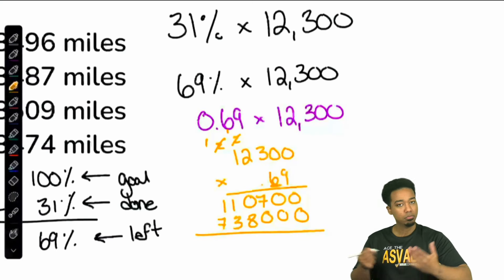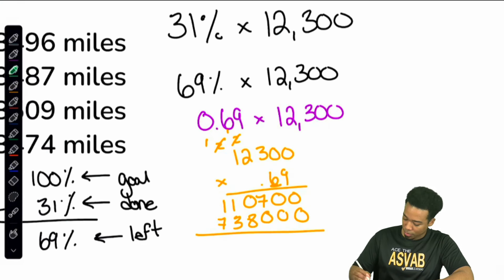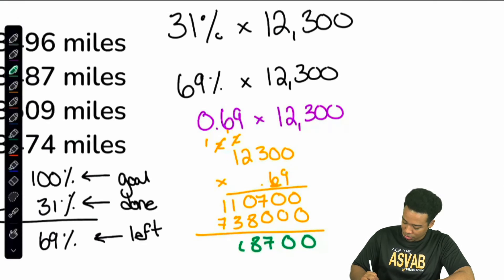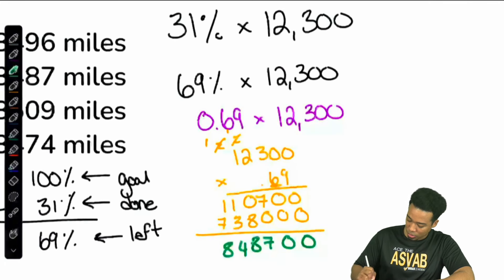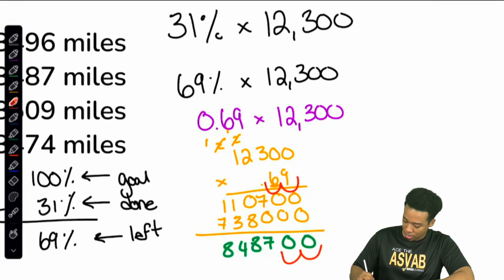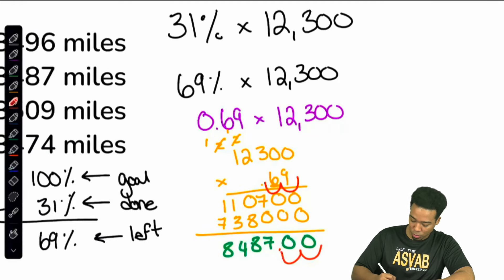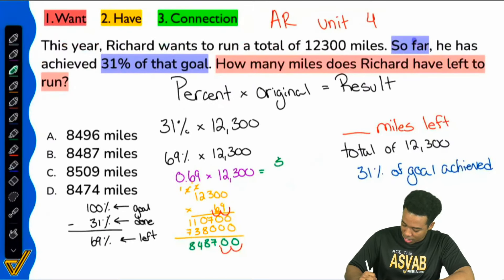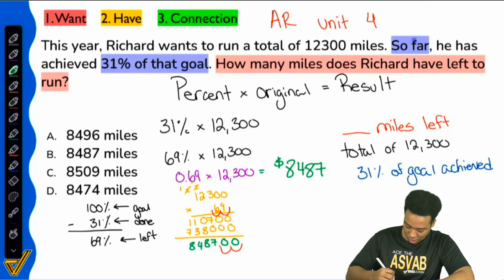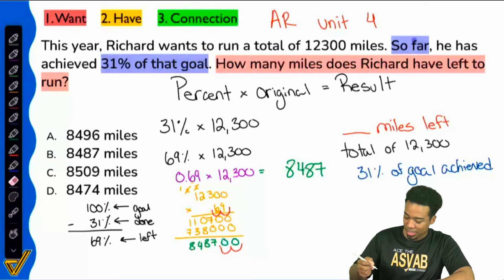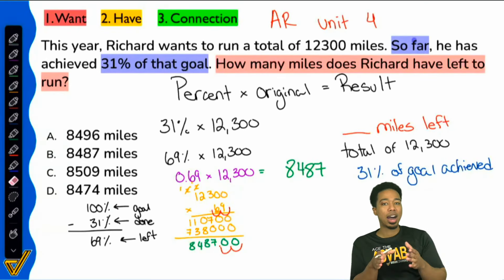Now lastly, all we have to do is add everything up, giving us 8,487. We take those two decimal places back, and there we are. We've got ourselves a final answer of 8,487 miles left. Context matters — remember that.